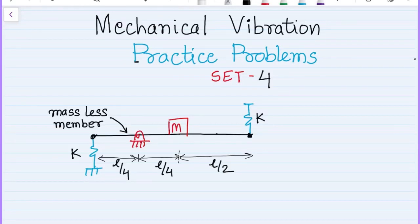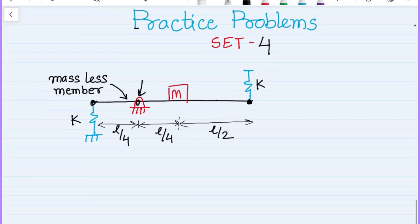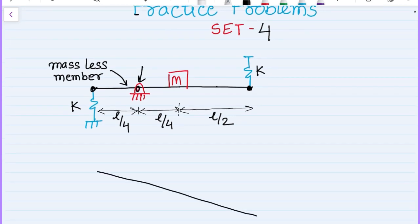Find the natural frequency of the system where we have a massless member connected with springs at the two ends. A mass of magnitude m is placed at a distance of L/4 from the left end. This is a pin joint, so the system will vibrate when given an initial displacement. The pin point will not move, and we can see this end goes upward while the other end goes downward. Considering the motion, the mass moves in the downward direction.